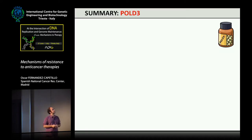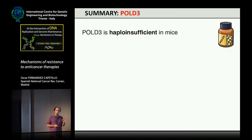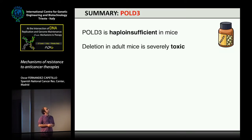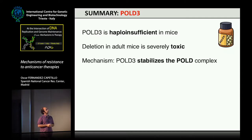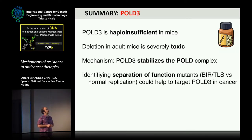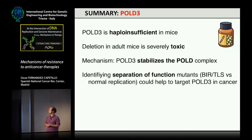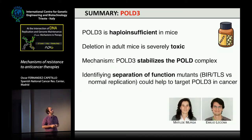The message of this first part is that Pol D3 shows haploinsufficiency for DNA replication — even heterozygous cells have compromised replication. Deletion in adult mice is severely toxic. The mechanism is simply that Pol D3 stabilizes the whole Pol D complex, and eliminating it destabilizes the complex in mammals. To study functions like BIR or TLS going forward, you probably need a separation-of-function mutant able to do normal DNA replication. This is the work of Matilde and Emilio Mosley, together with Thanos and Juan.